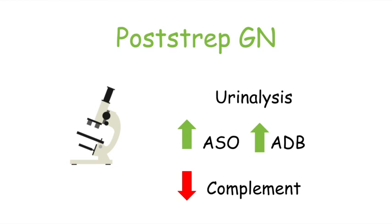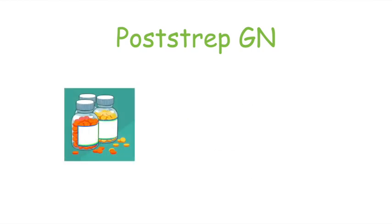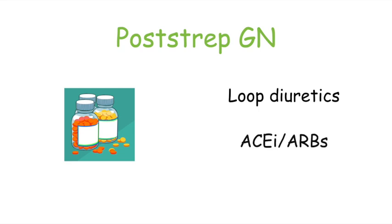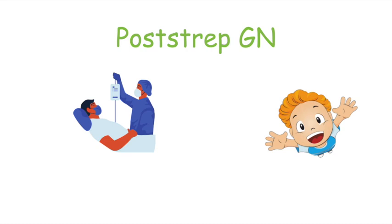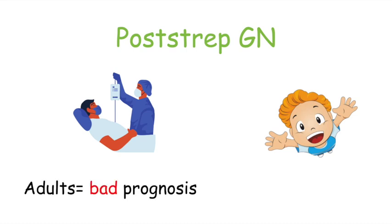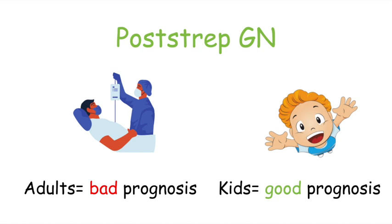Management of post-strep GN is mainly supportive care: a low-sodium, low-protein diet or loop diuretics for edema, and ACE inhibitors or ARBs for hypertension and hematuria. Post-strep GN usually resolves within eight weeks. Children have a very good prognosis, however 50% of adults can develop renal failure and have a worse prognosis.